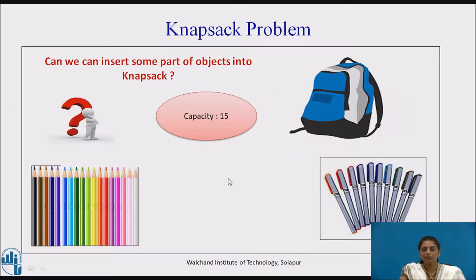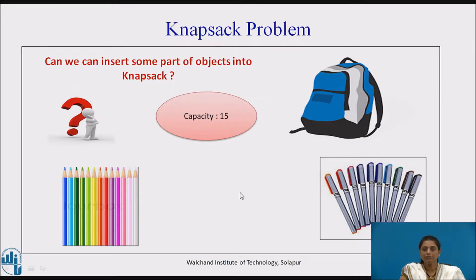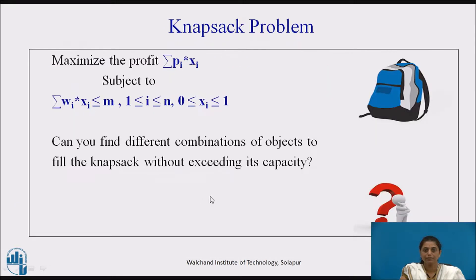Let us try another combination. We have already put the second object in. Now we will try to put a fraction of the first object — only 5 parts of the first object — so now the capacity has become 20. We have put the second object completely and some part of the first object. The objective is to maximize the profit pi into xi, subject to the summation of wi into xi being less than or equal to m — meaning the total weight in the knapsack must not exceed its capacity.